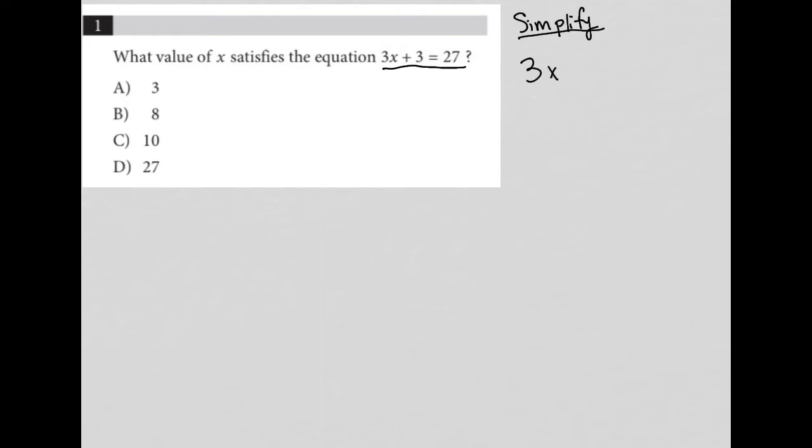So we have 3x plus 3 equals 27. I can subtract 3 from both sides in route to isolating my x value.